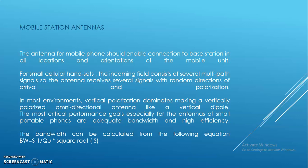The bandwidth can be calculated from the following equation: bandwidth equals (s minus 1) divided by (Q_u times square root of s), where Q_u is the unloaded quality factor and s is the VSWR.